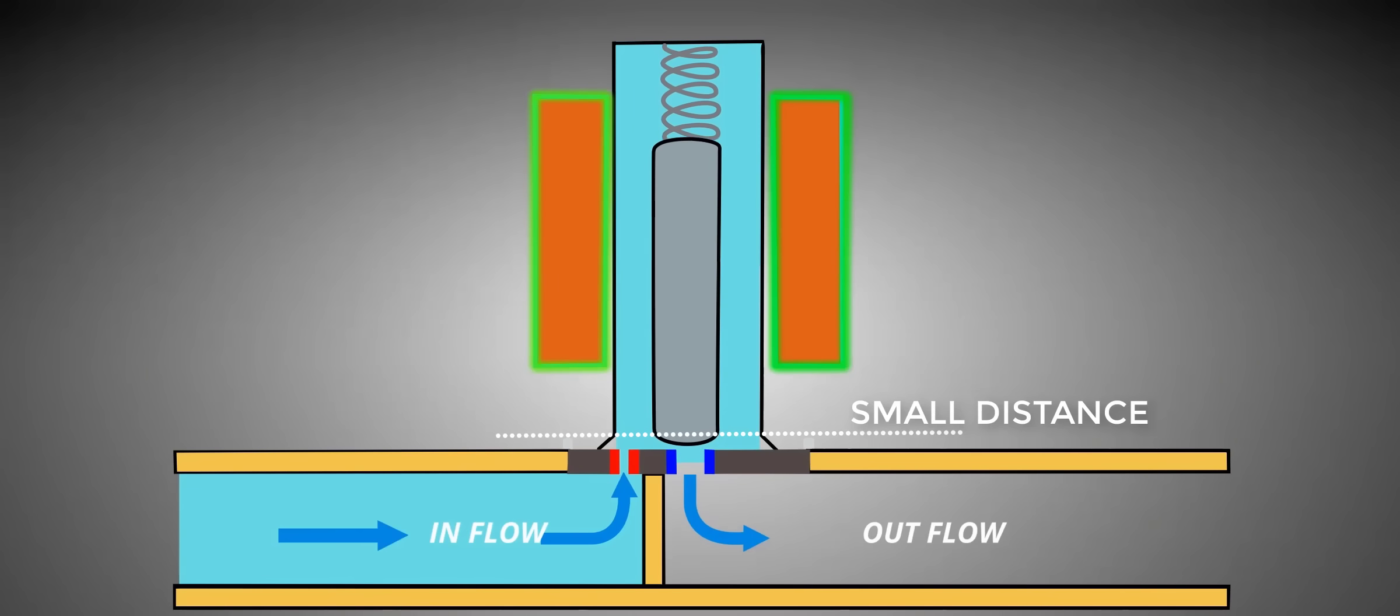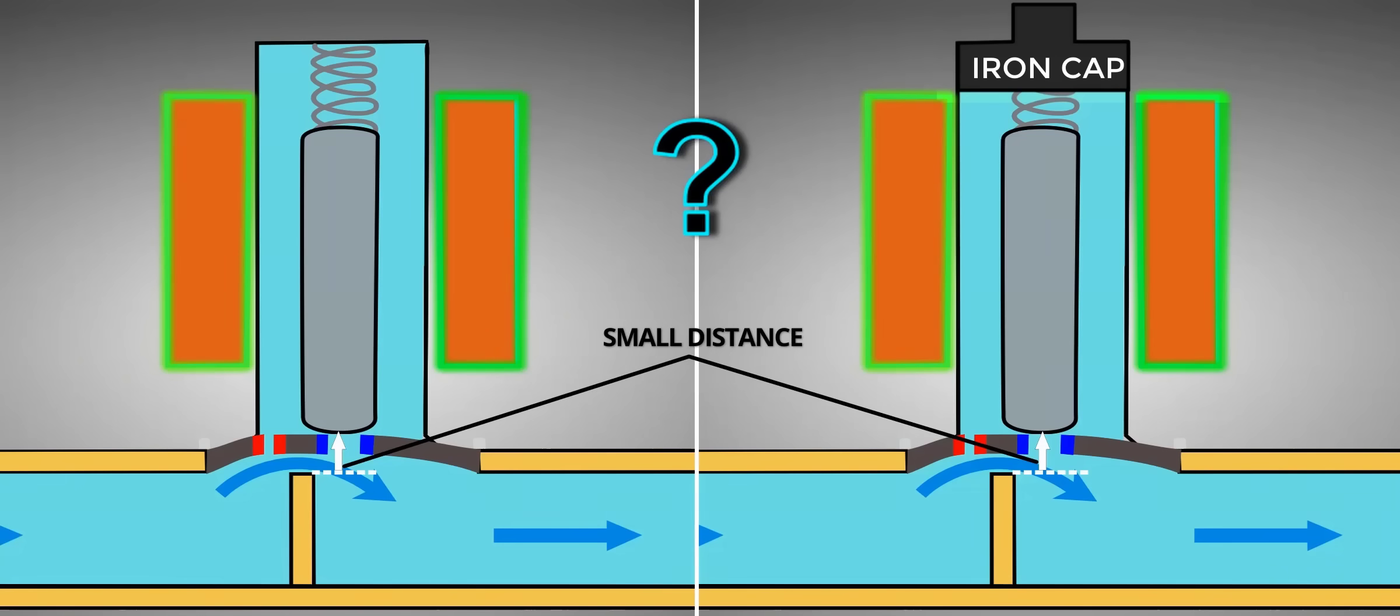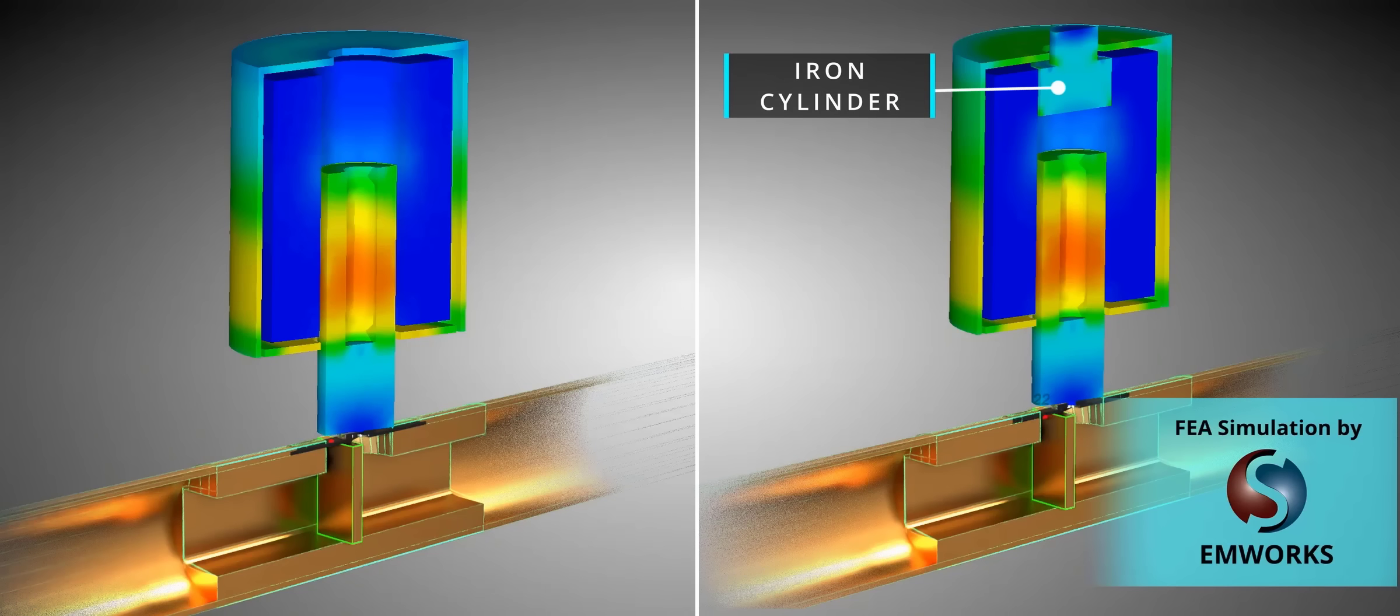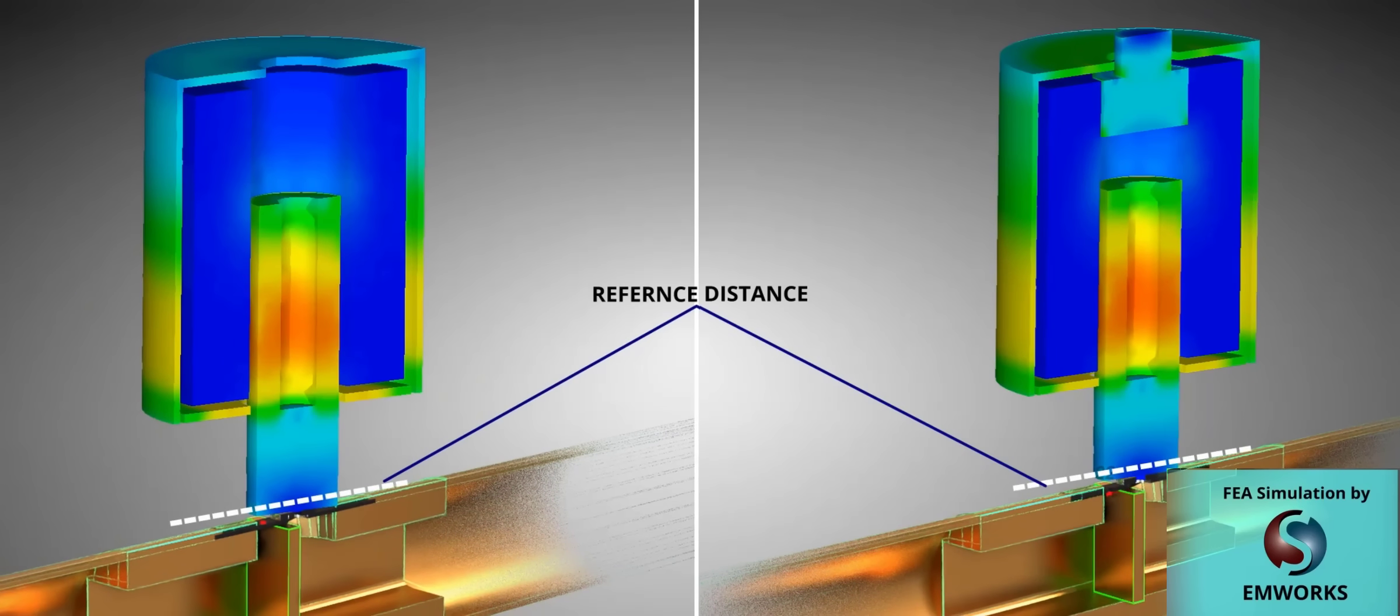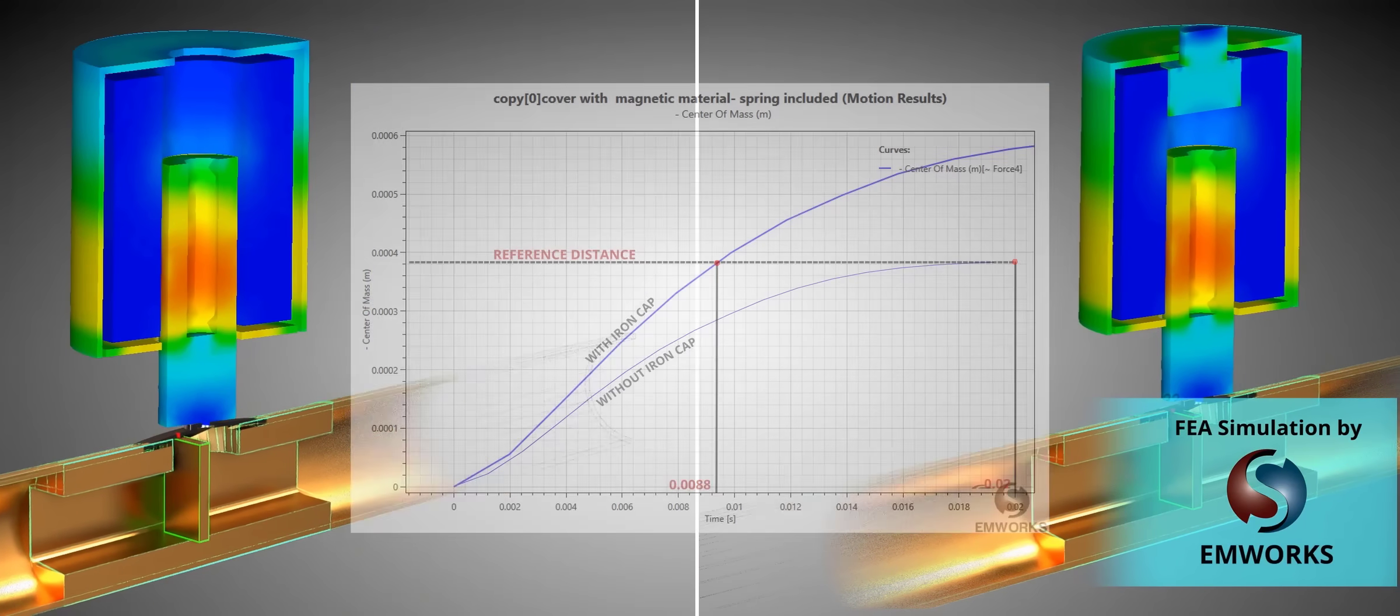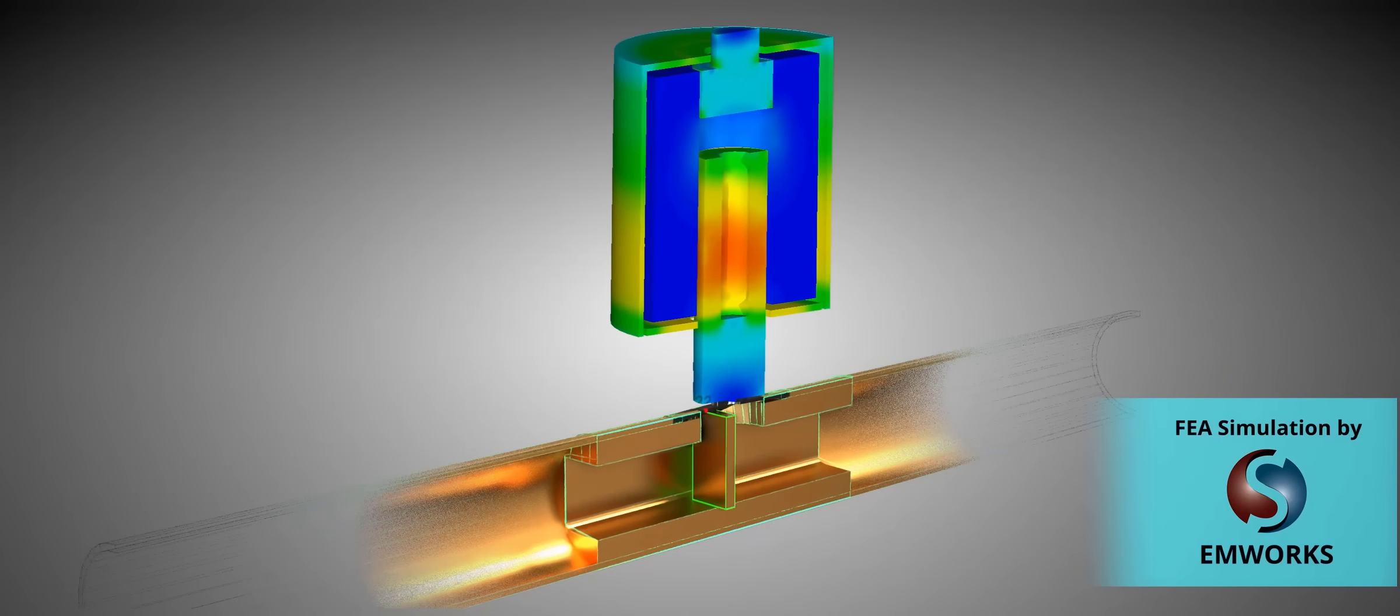We already learned that after the armature has moved a small distance, the diaphragm bends and the valve becomes operational. Now, let's see which design achieves that small distance first. Here is a competition between a solenoid valve with and without this iron cylinder, using the popular FEA simulation software EMWorks. You can see that the solenoid valve with the extra iron cap reaches that distance in half the time of the other case. This obviously reduces the response time of the solenoid valve. The reason for the fast movement is that the iron cap produces a strong magnetic pole. There you have it. We have now designed a quick and efficient 2x2 solenoid valve.